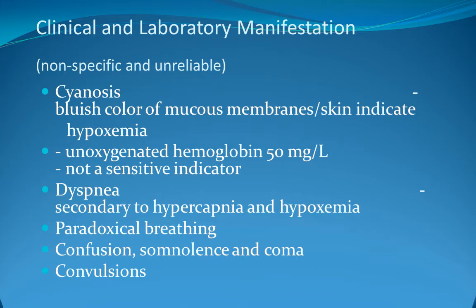In hypercapnia there may be headache, peripheral vasodilation, tachycardia, bounding pulse, tremor, flap, papilledema, confusion, drowsiness, and coma. Essential investigations include FBC, U&E, CRP, and ABG, with ABG being very important. Spirometry is important for COPD, neuromuscular disease, and Guillain-Barré syndrome.